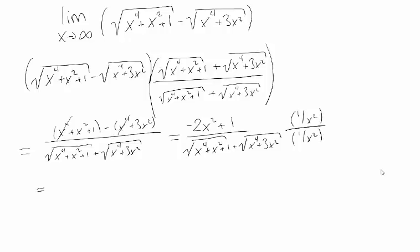So now I'm going to distribute this in, and that takes care of the top. For the bottom, I have to remember that x squared is the same as the square root of x to the fourth, and I distribute it in just the way I did on the top.